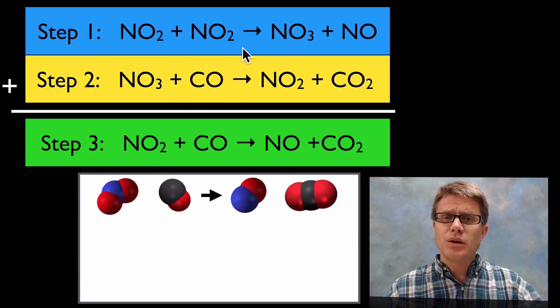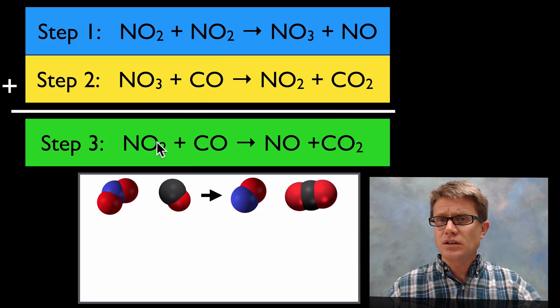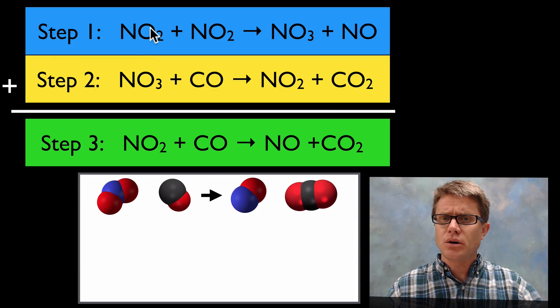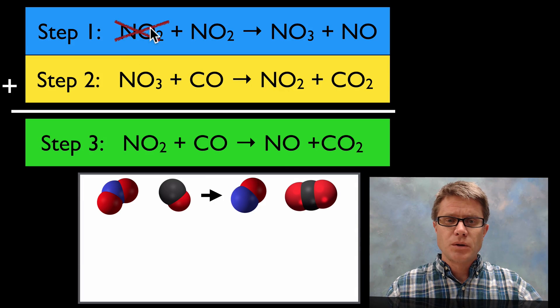But if you look here, a good way to figure out what are going to be the intermediates is to just start canceling things out that aren't in our final equation. So if we look at this overall equation, let's just go up here and start crossing out things that show up here.